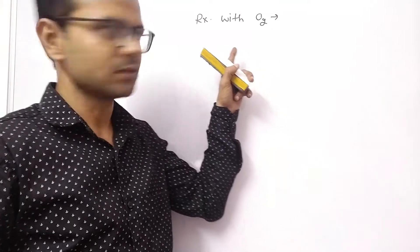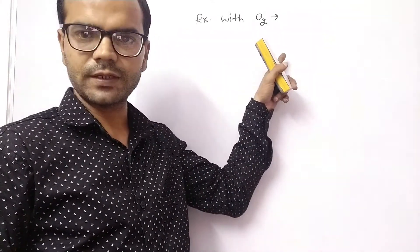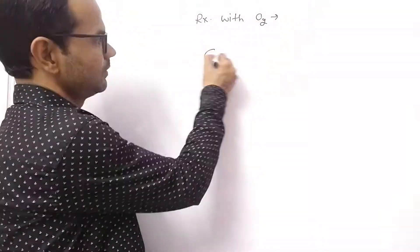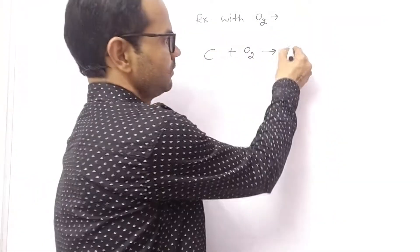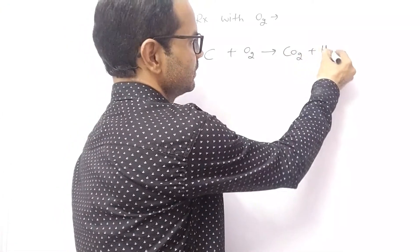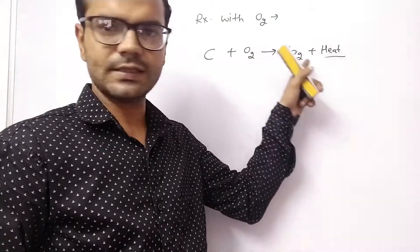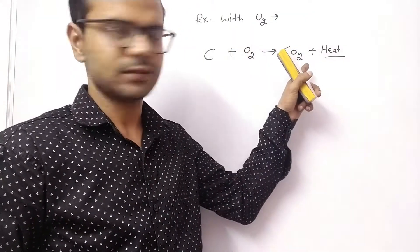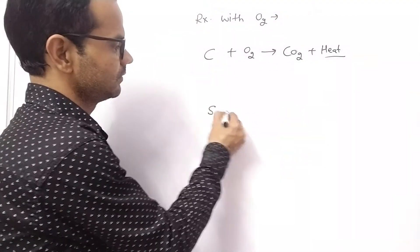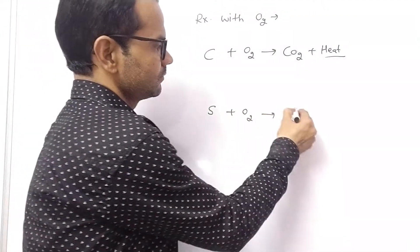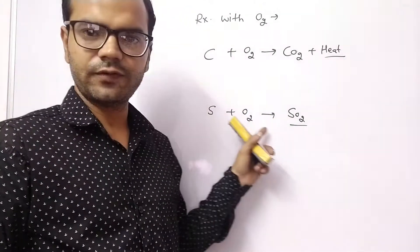First is the reaction with oxygen. Non-metals react with oxygen to form their respective oxides. For example, carbon plus oxygen gives CO2 and energy is released in this reaction, so we can say this is an exothermic reaction. This product is carbon dioxide. Similarly, sulfur reacts with oxygen to form sulfur dioxide.